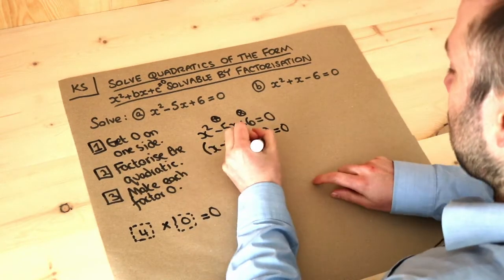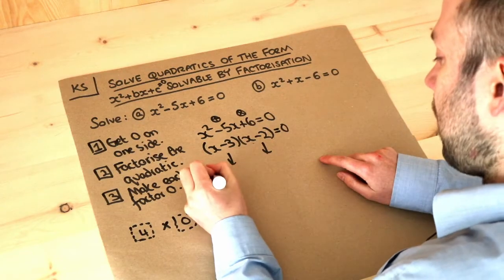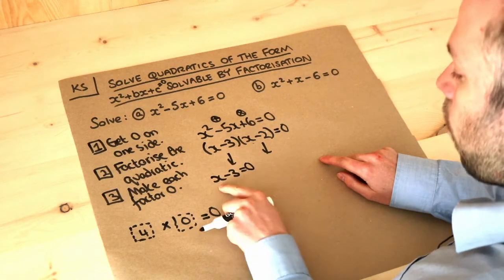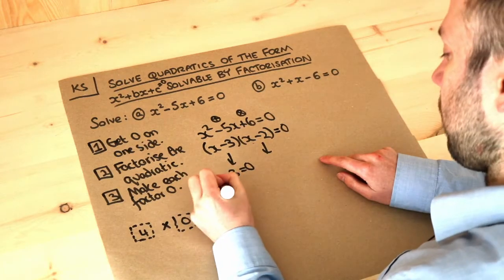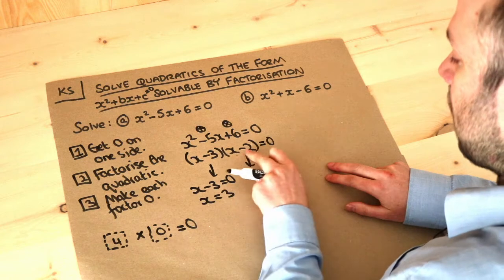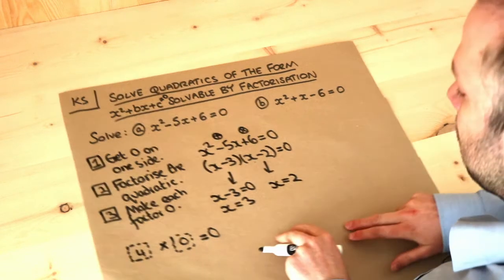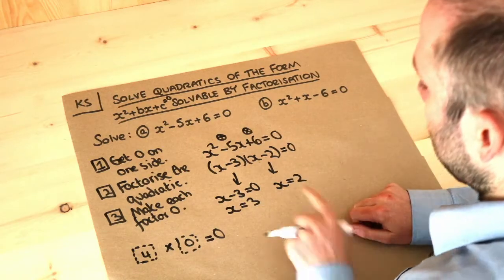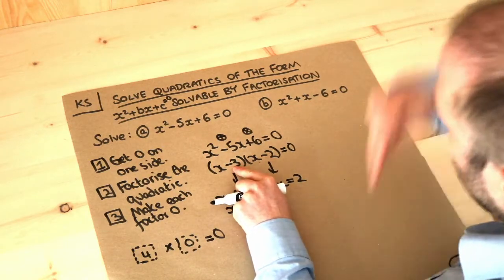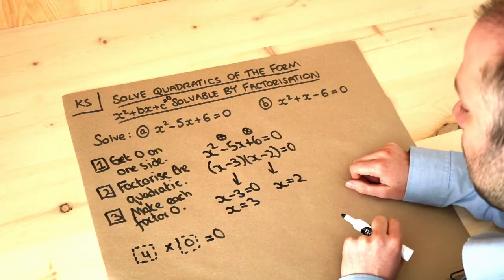So we've got two things multiplied together to give zero. So if it was the x minus three that was zero, what minus three is zero? Well it's three, so x is three. Or if the x minus two was zero, what minus two is zero? Well it's x is equal to two. And the quick way to do it is to just negate whatever that number is here. So if it's minus three you negate it, you make it positive, so that becomes plus three. If it's minus two you negate it, it becomes plus two.